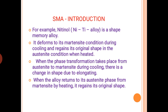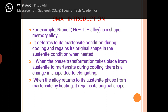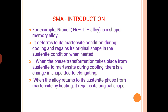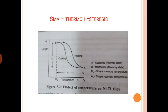The best well-known example of an SMA is Nitinol, the NiTi alloy. It deforms to its martensite condition during cooling and regains its original shape in the austenite condition when heated. When phase transformation takes place from austenite to martensite during cooling, there is a change in shape due to elongation. When the alloy returns to its austenite phase from martensite by heating, it comes back to its original shape. This diagram explains the NiTi alloy undergoing shape change — this is called thermo hysteresis.